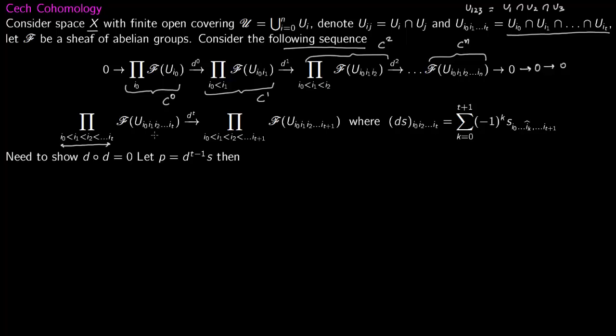You take the section s here, you apply d^t to it, then you land in this part. So you land in t+1 indices: i_0, i_1, i_2 all the way to t+1. This equals the summation k equals 0 to t+1 of minus one to the power of k.